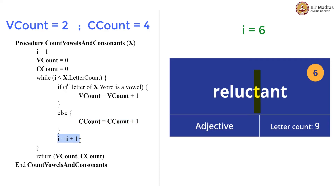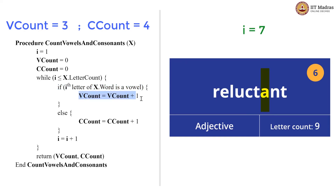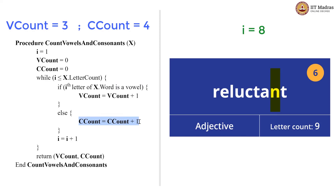We come out and increment i to 7, then check the while condition again. 7 is less than 9, so we go inside and check the if condition. The seventh letter of x dot word is 'a', which is a vowel, so we increment v_count, giving us 3 vowels and 4 consonants so far. We do not execute the else block. We increment i to 8. 8 is less than 9, so we check if the eighth letter is a vowel — it is not, it is 'n' — so we go into the else block and increment c_count to 5. We then increment i to 9.